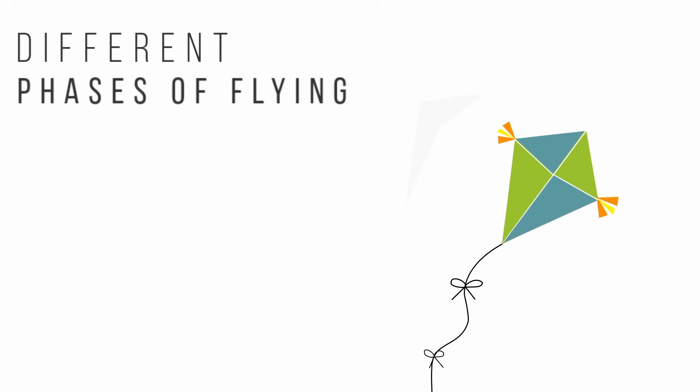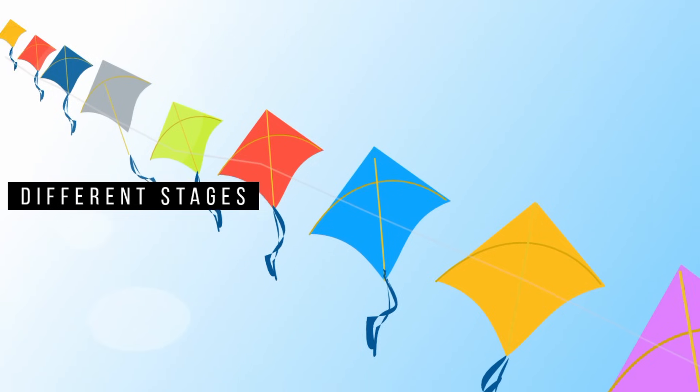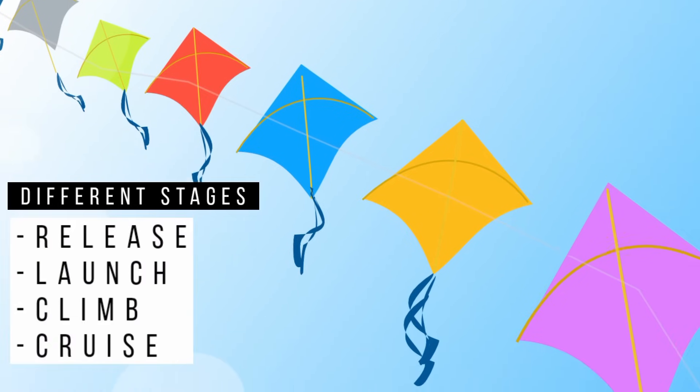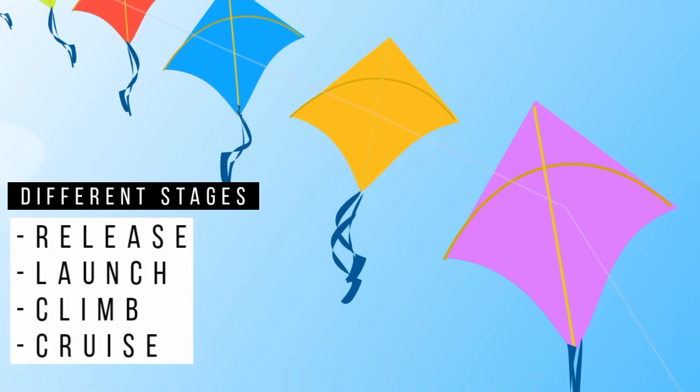Just like rockets and airplanes, there are different phases of flying a kite. These different stages are the release, launch, climb, and cruise.